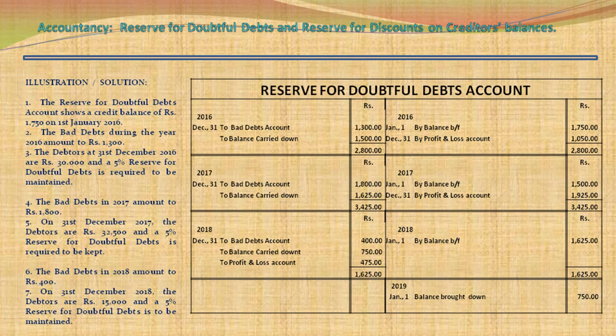Let us solve the above illustration and post the transactions in Reserve for Doubtful Debts Account. We will open the Reserve for Doubtful Debts account with debit side and credit side columns for date, particulars, and amount. The credit balance of Rs. 1,750 on 1 January 2016 is recorded as balance brought forward on the credit side. The bad debts during 2016 amounting to Rs. 1,300 will be recorded on the debit side of the Reserve account as bad debts account Rs. 1,300.